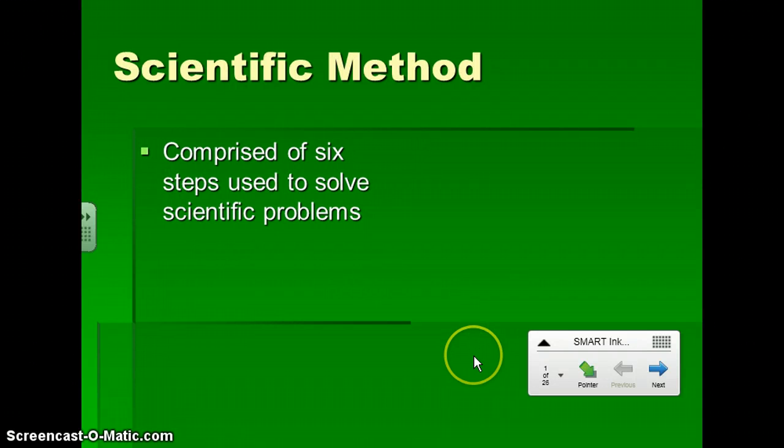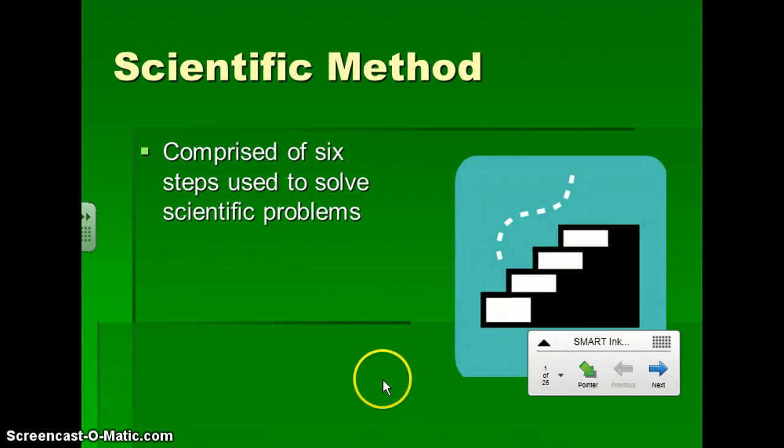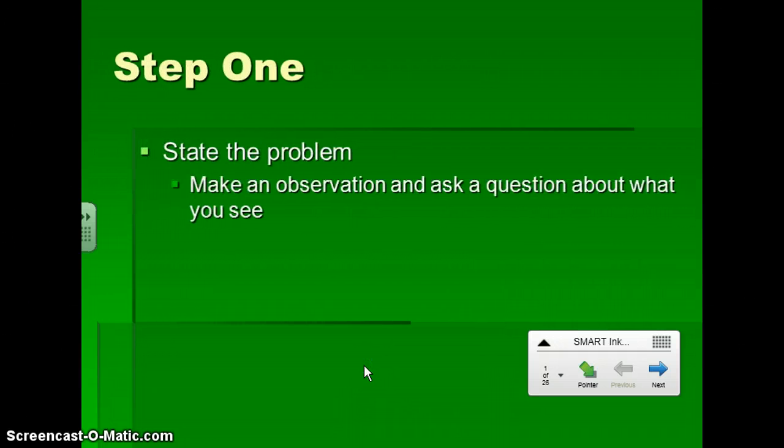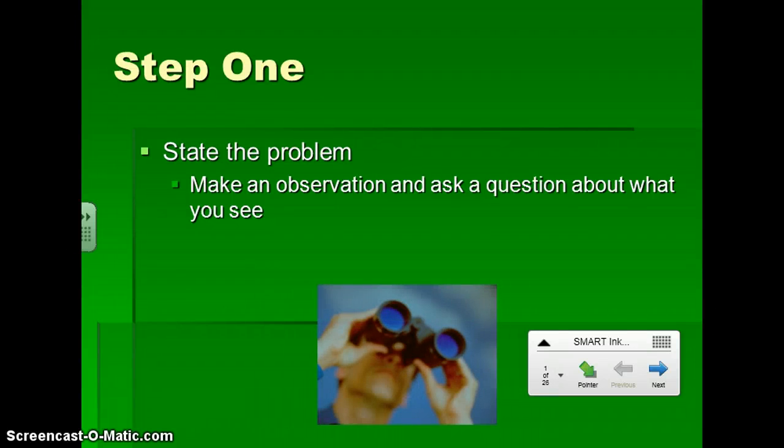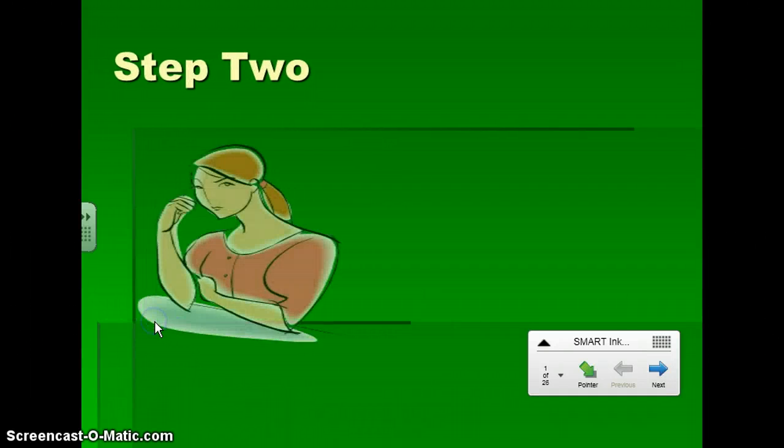So to the scientific method, and you've been learning about this for a while now, there are basically six steps to the scientific method. The first one is we state the problem. We're going to make an observation using our five senses, and then ask a question about what we see. In the second step, we're going to actually research the problem.